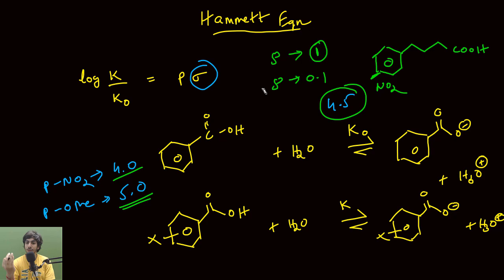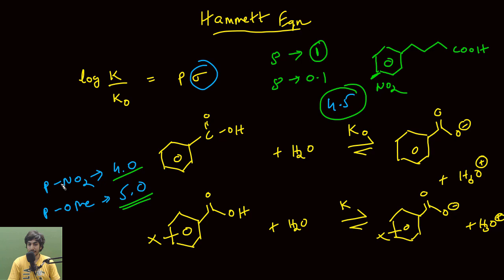From this hypothetical example, you can understand what exactly ρ is and its significance. The significance of ρ is that it tells us the influence of a particular substituent on the quantity we are going to measure — here we are measuring pKa. Sigma tells us what kind of substituent we have or what effect it is going to have: it can have a positive or a negative effect.